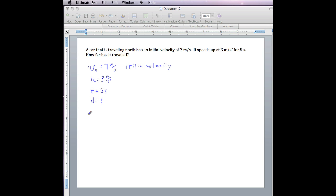So we need to find an equation that involves these four variables and that is d equals v naught t plus 1 half a t squared.